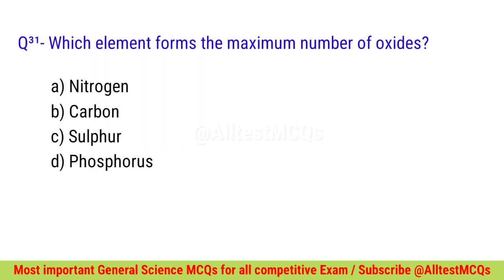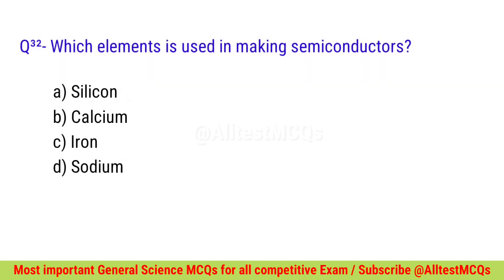Question number thirty-one: Which element forms the maximum number of oxides? Correct option is A — Nitrogen. Question number thirty-two: Which element is used in making semiconductors? Right option is A — Silicon.